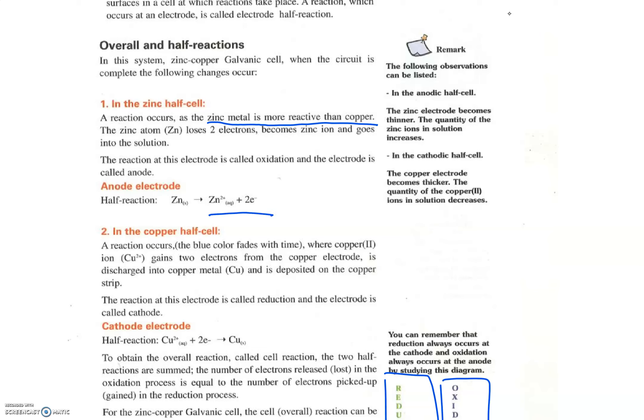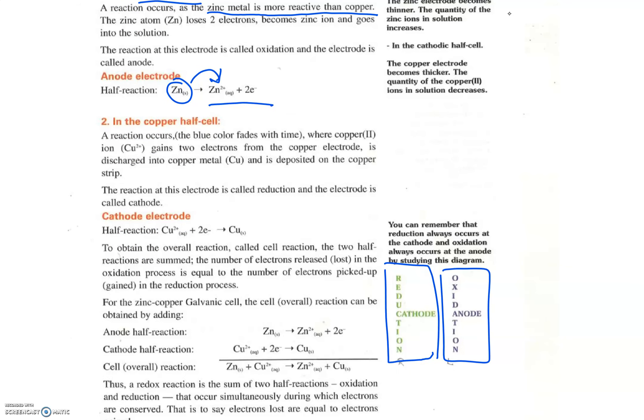In the zinc half cell, what happens is that zinc the metal will lose two electrons and become ions Zn2+, and so the metal will become thinner. The opposite is happening in the copper half cell.